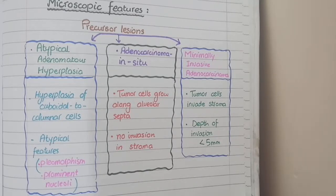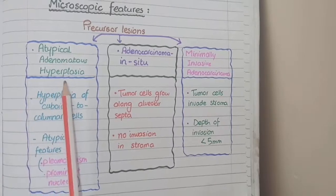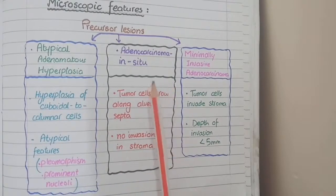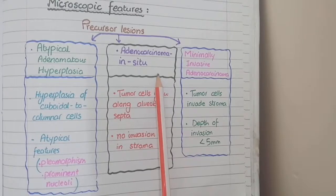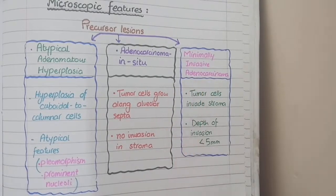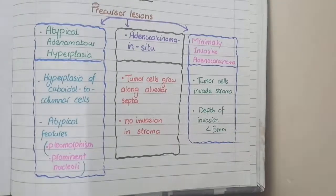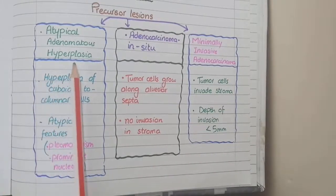For microscopic features, we will first study three precursor lesions of adenocarcinoma, after which we will study invasive adenocarcinoma. The precursor lesions are atypical adenomatous hyperplasia, which progresses to adenocarcinoma in situ, which then progresses to minimally invasive adenocarcinoma.